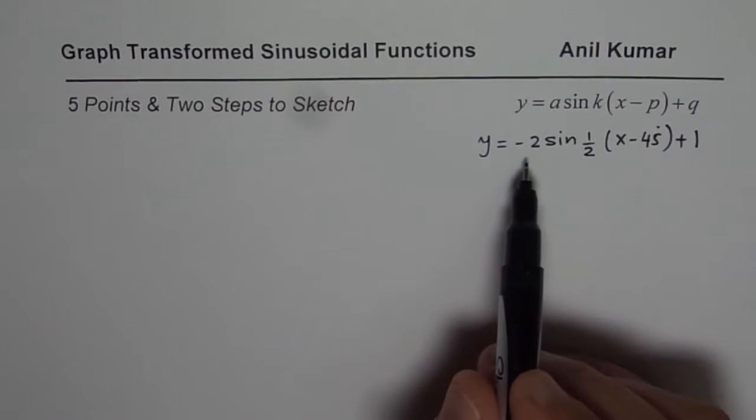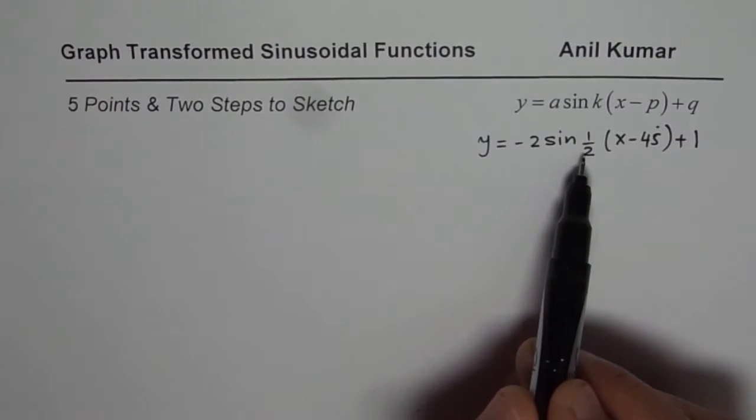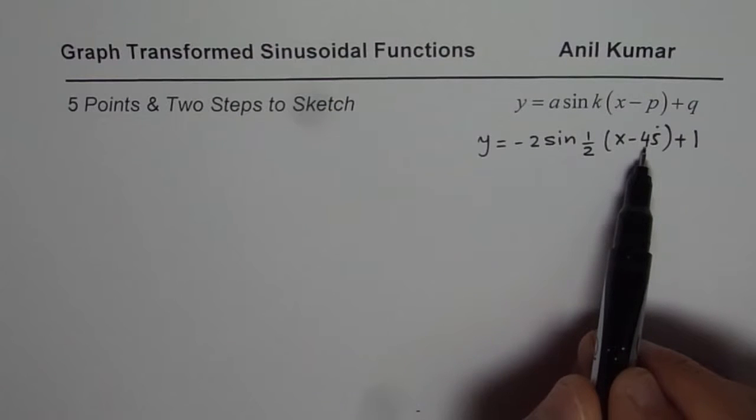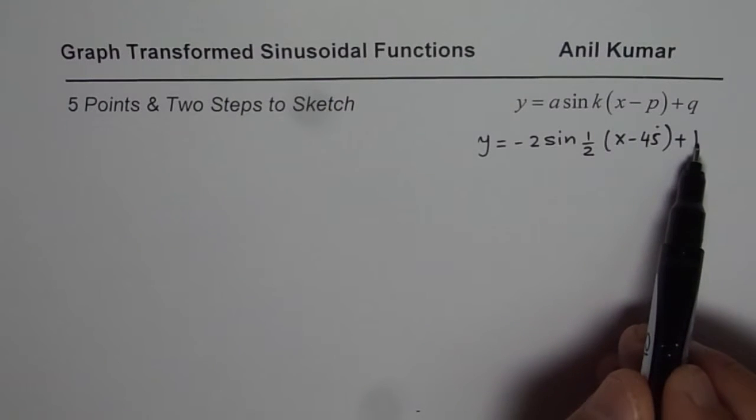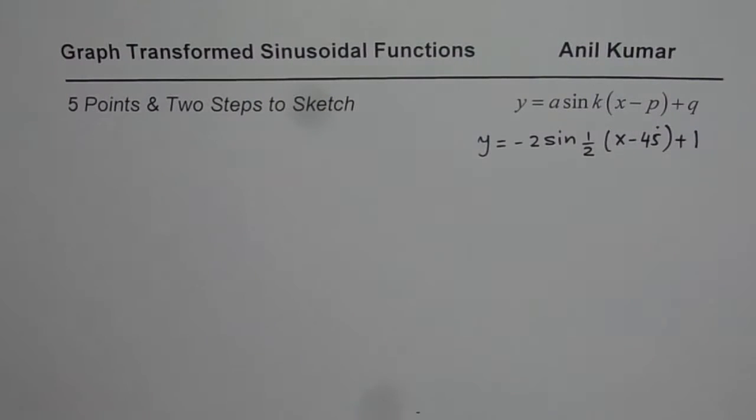As you can see here, we have vertical stretch by a factor of 2, reflection on x-axis, horizontal stretch by a factor of 2, translation of 45 degrees to right and one unit up. So this kind of graph we will sketch in two steps.